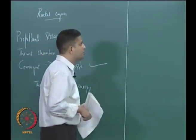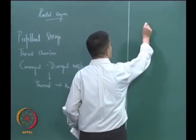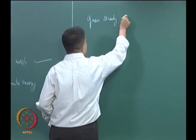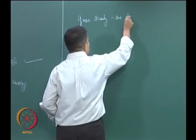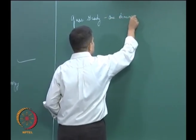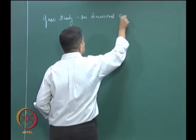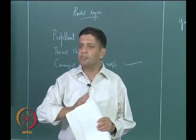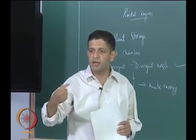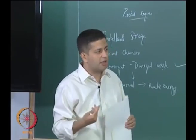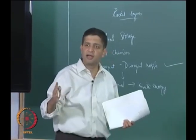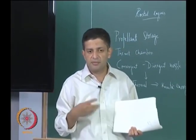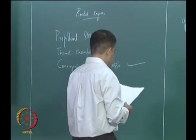Before we go there, what we are going to look at is a quasi-steady one-dimensional analysis. That is, we are going to assume that all changes happen along the axis only. There are no changes happening in the radial or azimuth direction — R and theta directions — we do not assume any changes to be happening. So, all changes are happening along the axis, so it is one-dimensional, which is not strictly true for a rocket engine nozzle. We will see what error this brings about a little later.